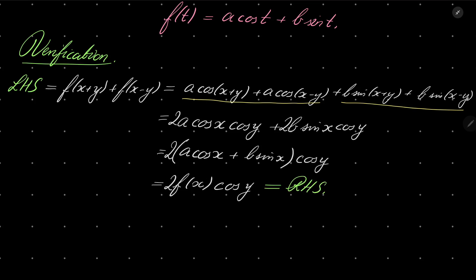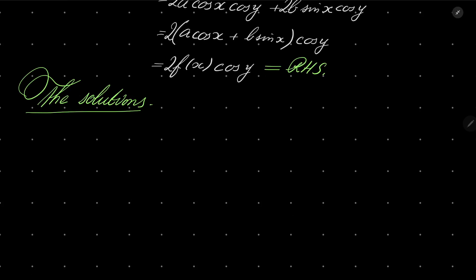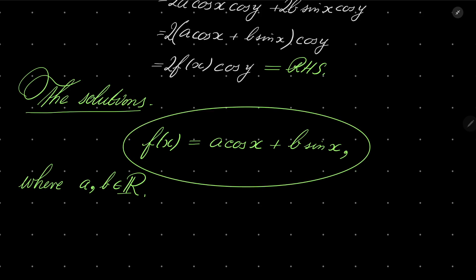So our solutions are functions of the form a·cos(x) + b·sin(x), where a and b are any real numbers whatsoever. And that closes our problem. Thank you very much for watching. I will see you next time. Goodbye.